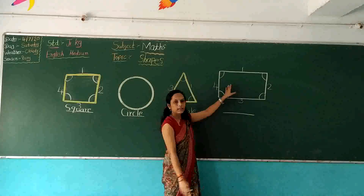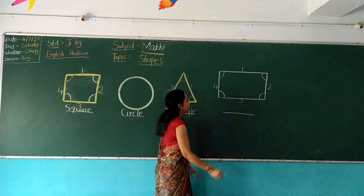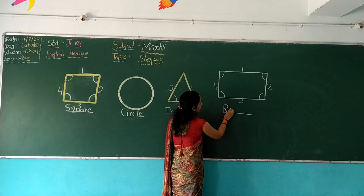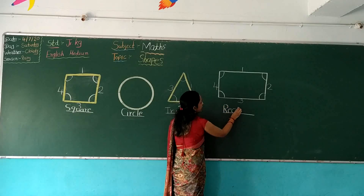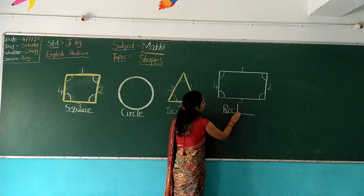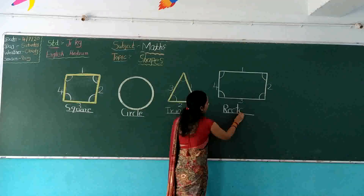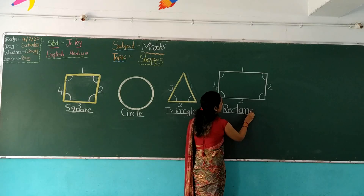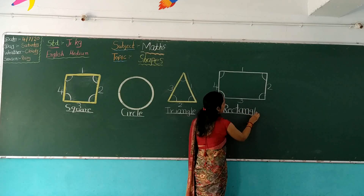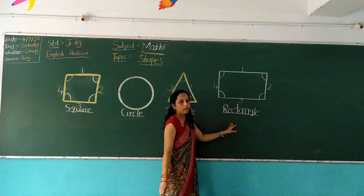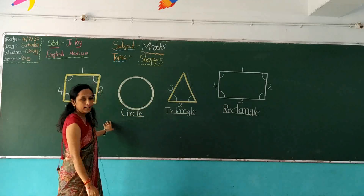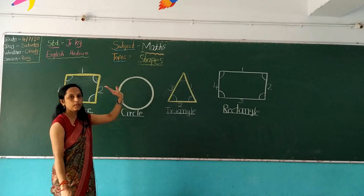So, this is a rectangle. R, E, C, T, A, N, G, L, E. Rectangle. It's like a wall. Our wall is rectangle shape. Okay.